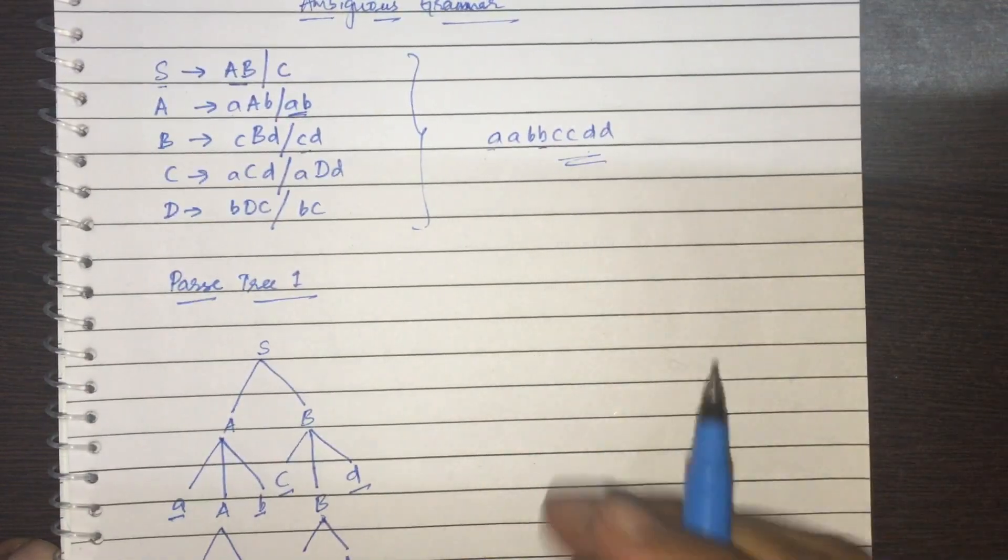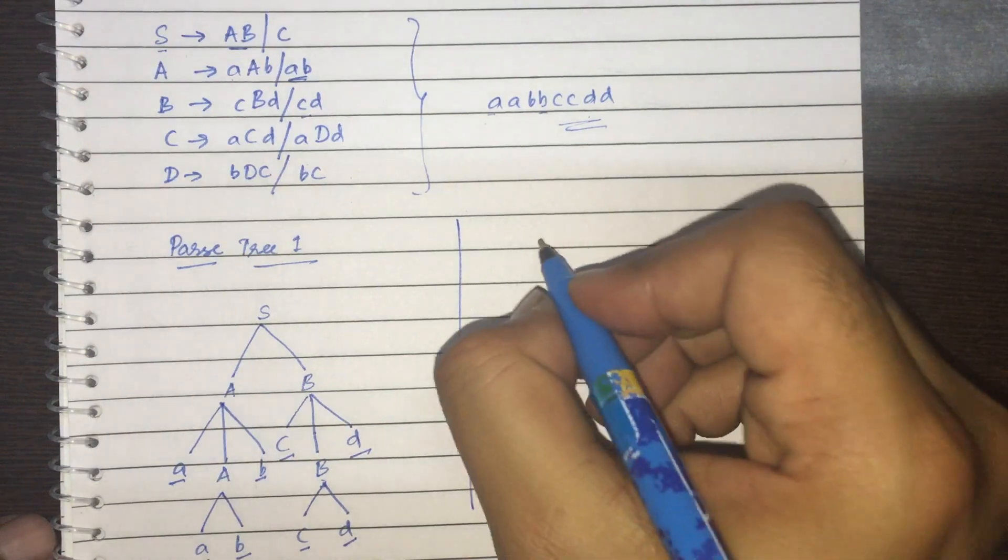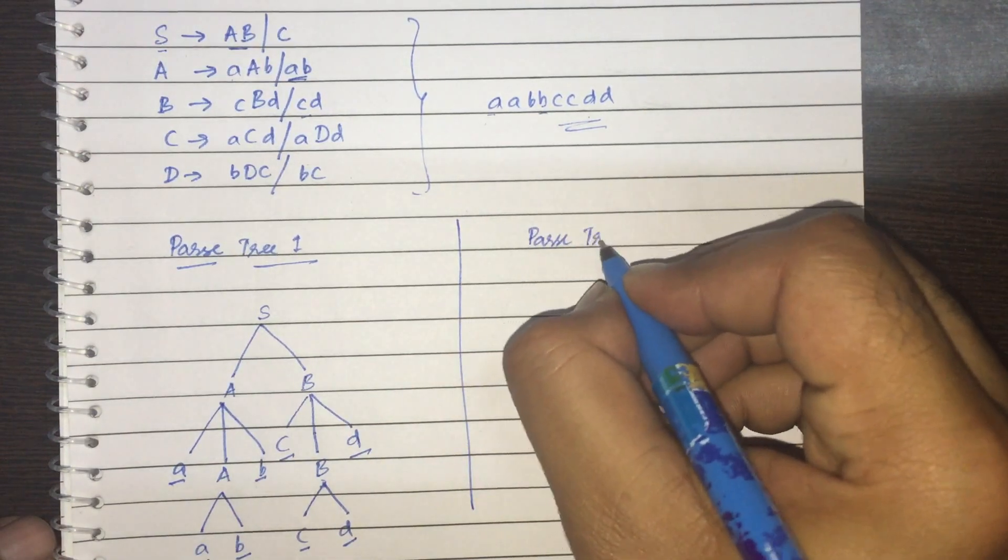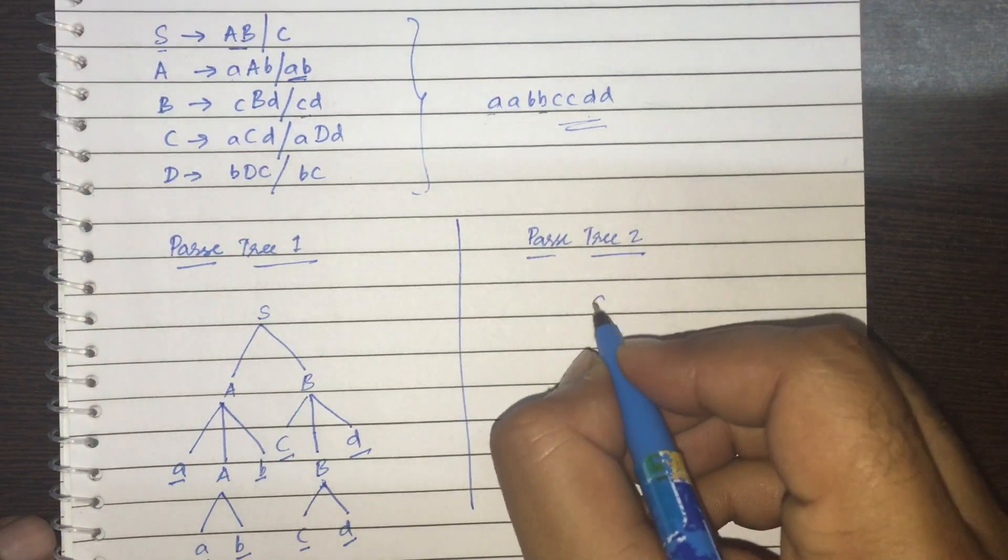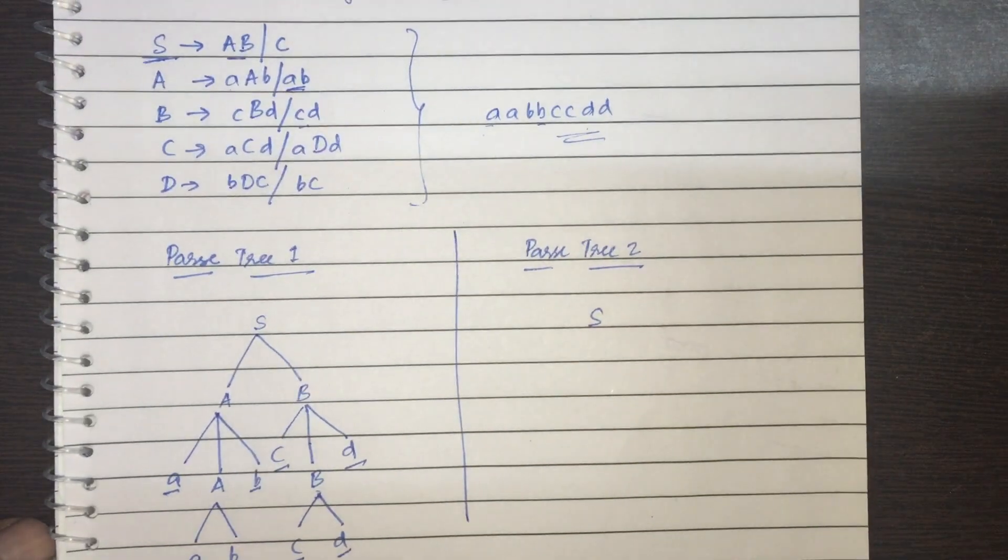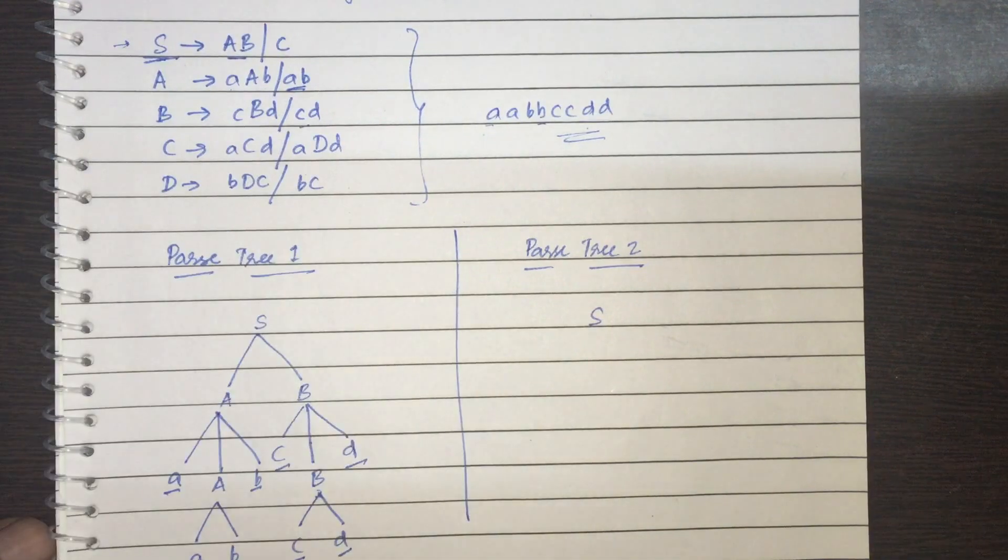This is what I expected. Let me try to construct another parse tree for the same grammar, for the same resulting string. I'll have to start with the same. Yes. This is always the starting. You can't start with any other symbol. So this is considered to be the starting production.